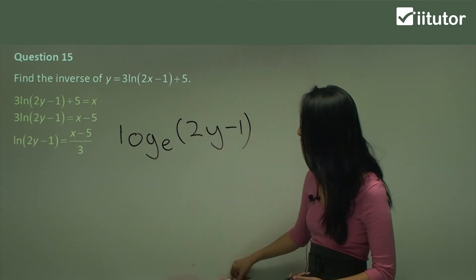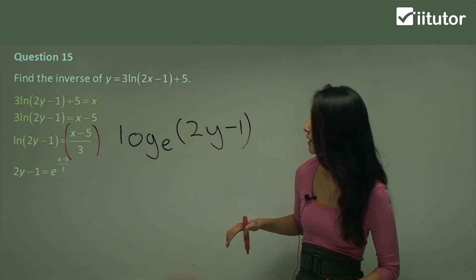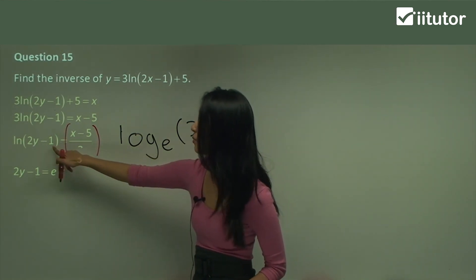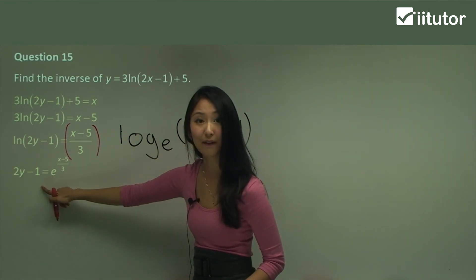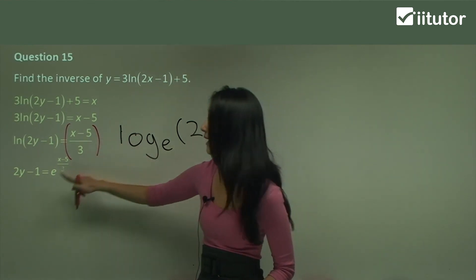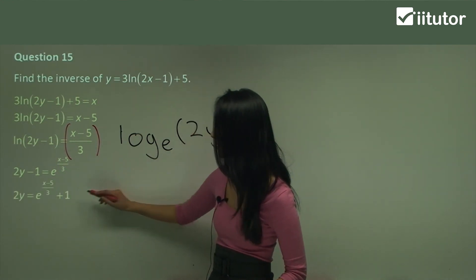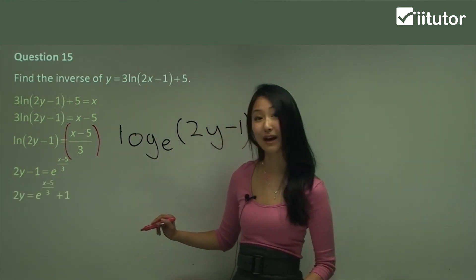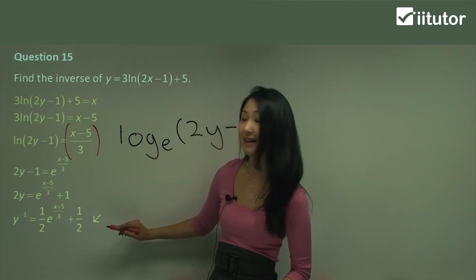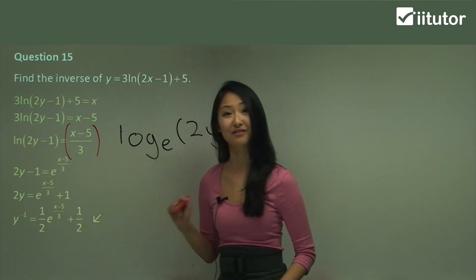So we make the base of the log — which is e — the base of the index, and the entire expression (x minus 5) over 3 becomes the index. That gives us e to the power of (x minus 5)/3 equals 2y minus 1. Then we move 1 to the other side and divide everything by 2, leaving y equals one half e to the power of (x minus 5)/3 plus one half, and we write it with the inverse notation.